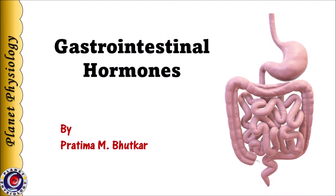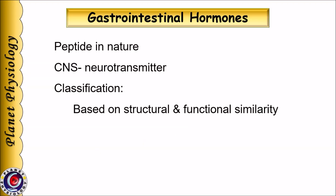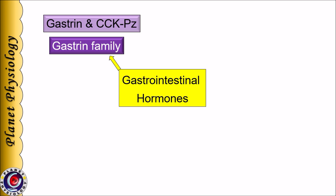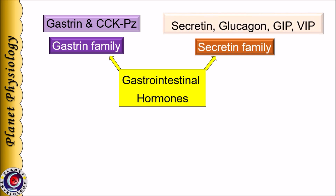Hi, this is Pratima from Planet Physiology. In this session we are going to learn about gastrointestinal hormones. Gastrointestinal hormones are polypeptide in nature and act in paracrine as well as endocrine fashion. Many of these hormones also act as neurotransmitters in the central nervous system. Based on their structural and functional similarities, these hormones are classified into two families: the first is the gastrin family, which mainly includes gastrin and cholecystokinin, and the second is the secretin family, which includes secretin, glucagon, GIP, and VIP.